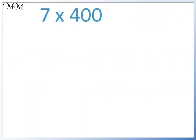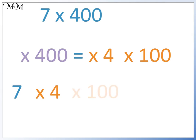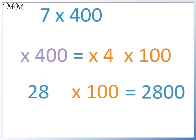Here we have 7 times 400. Multiplying by 400 is the same as multiplying by 4 and then by 100. We can change 7 times 400 to 7 times 4 times 100. 7 times 4 equals 28, and 28 times 100 equals 2800. So 7 times 400 equals 2800.